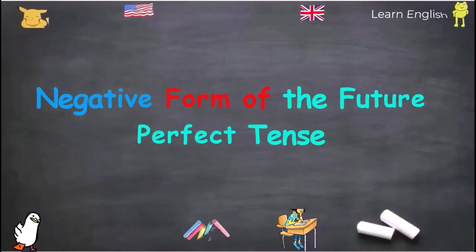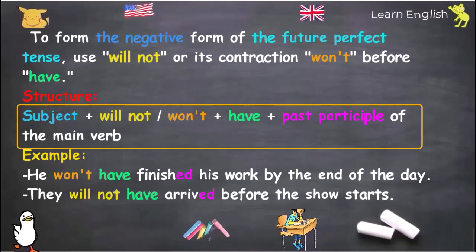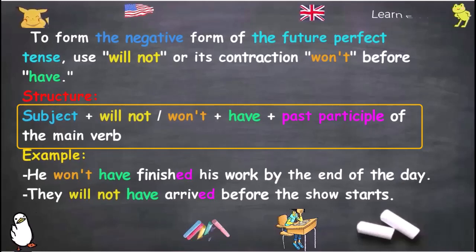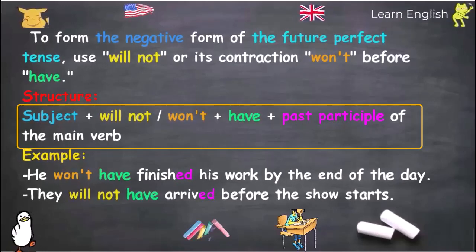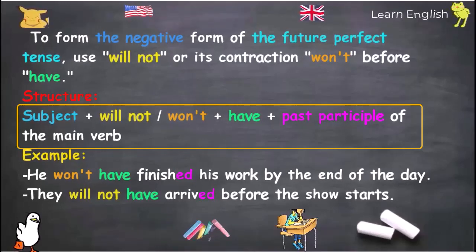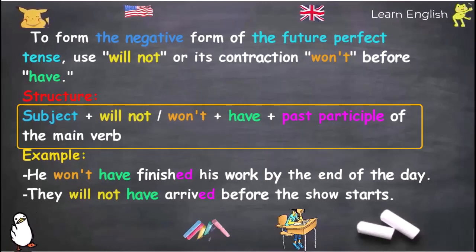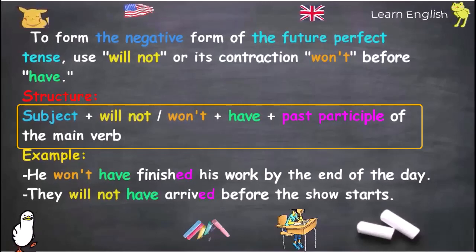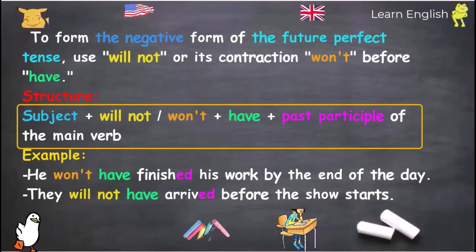Negative Form of the Future Perfect Tense: To form the negative, use 'will not' or its contraction 'won't' before 'have.' Structure: Subject + will not (won't) + have + past participle of the main verb. Examples: 'He won't have finished his work by the end of the day.' 'They will not have arrived before the show starts.'